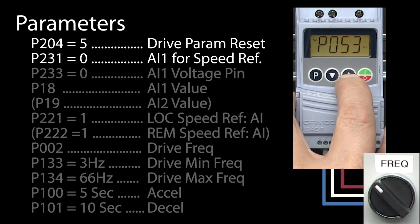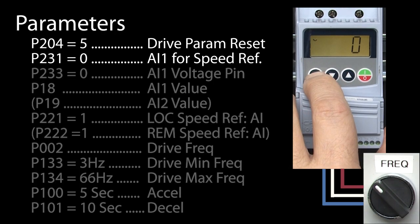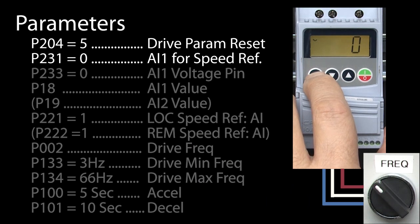First, we need to go to parameter 231 to tell the drive we're using analog input 1 as a speed reference. According to the manual, we need a zero for that. And as it turns out, that's a default, so we're good to go there.